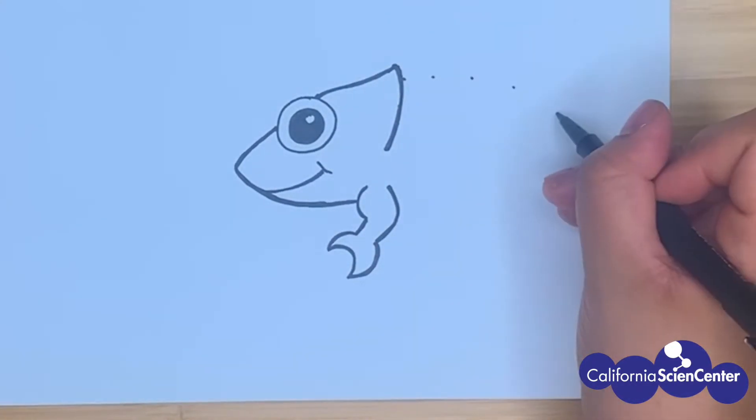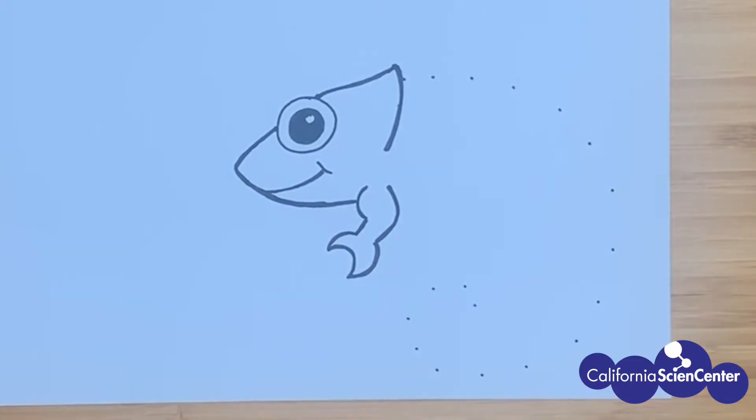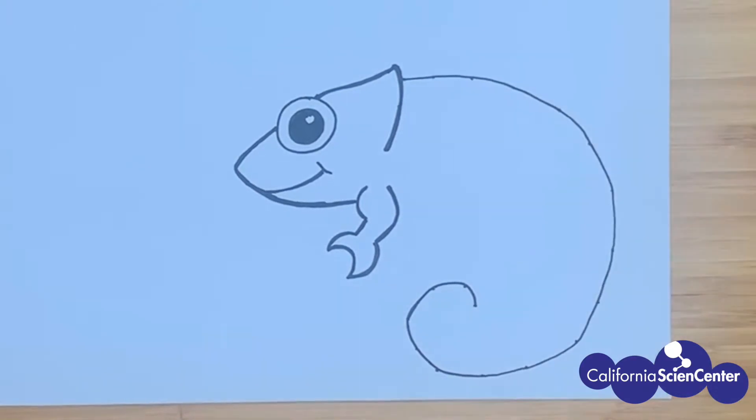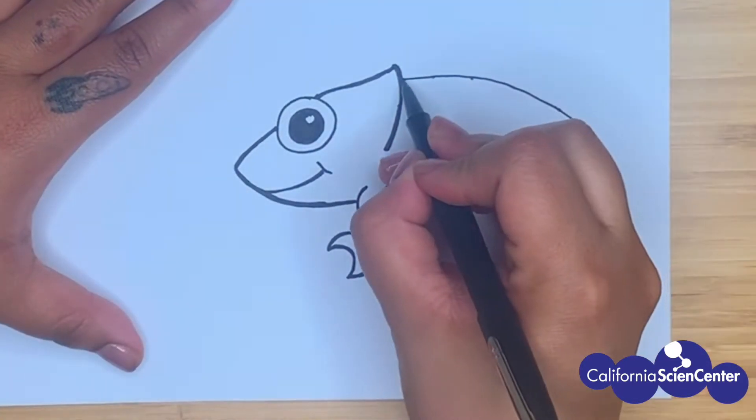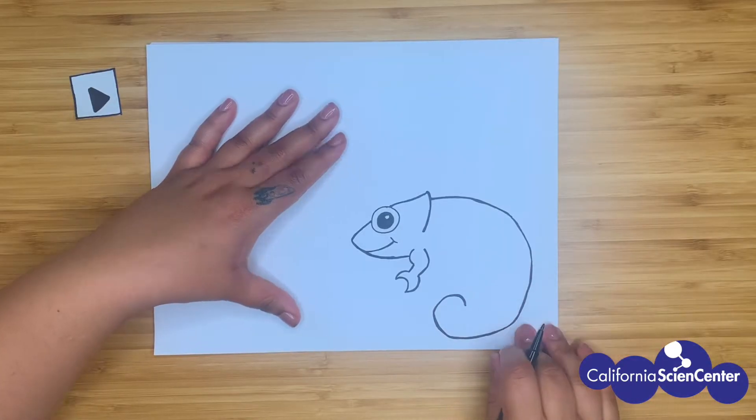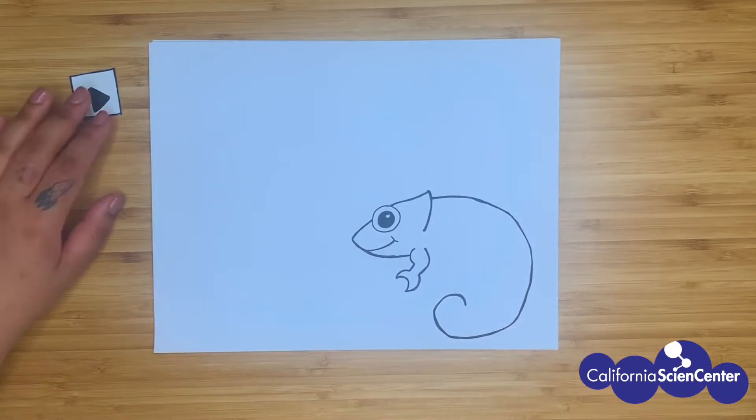Next, I'm going to draw baby chameleon's body tail. I will use the dots to guide my path and make sure to make the line thick as I make his body.